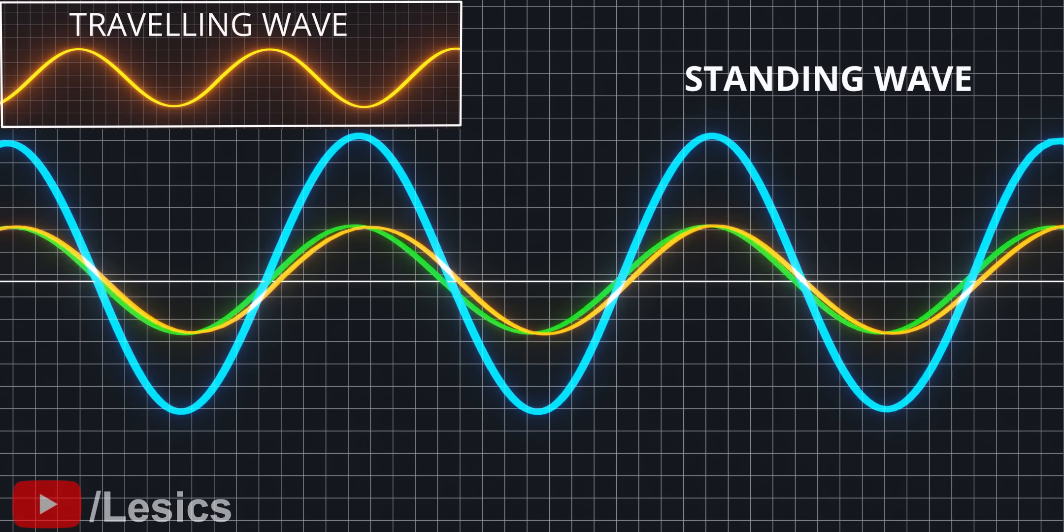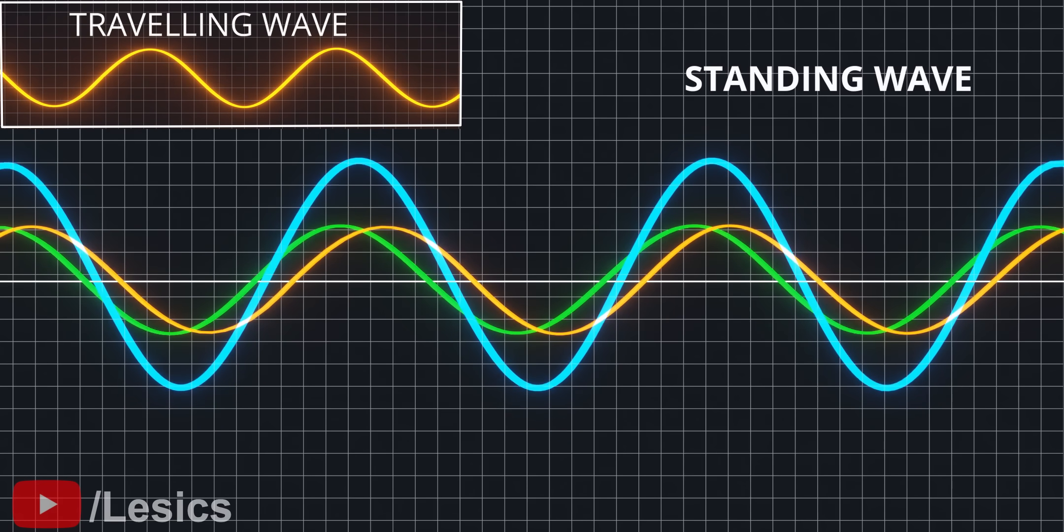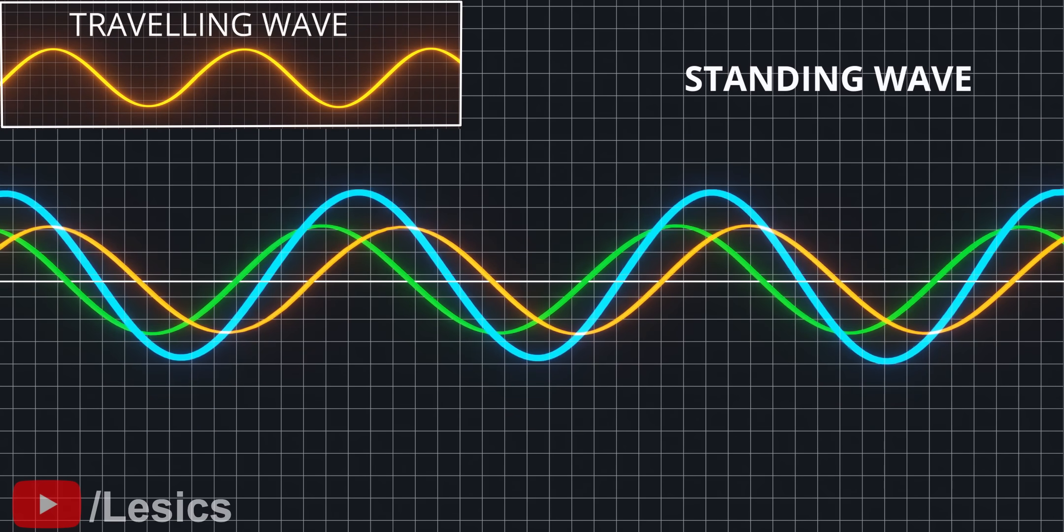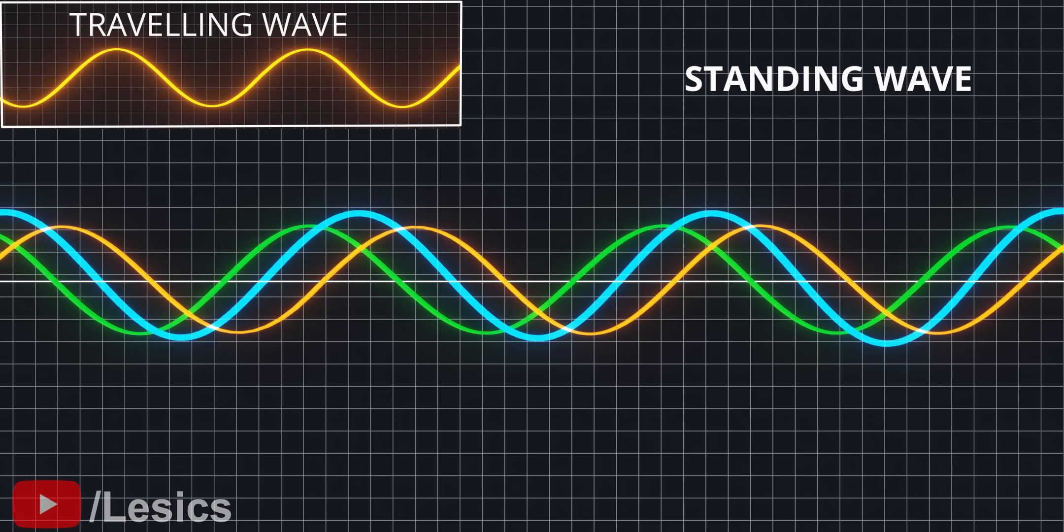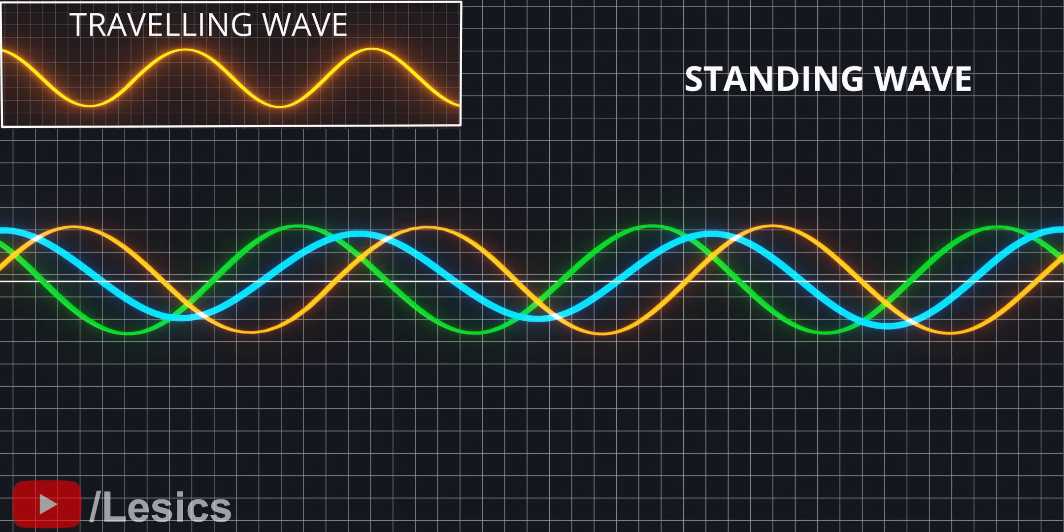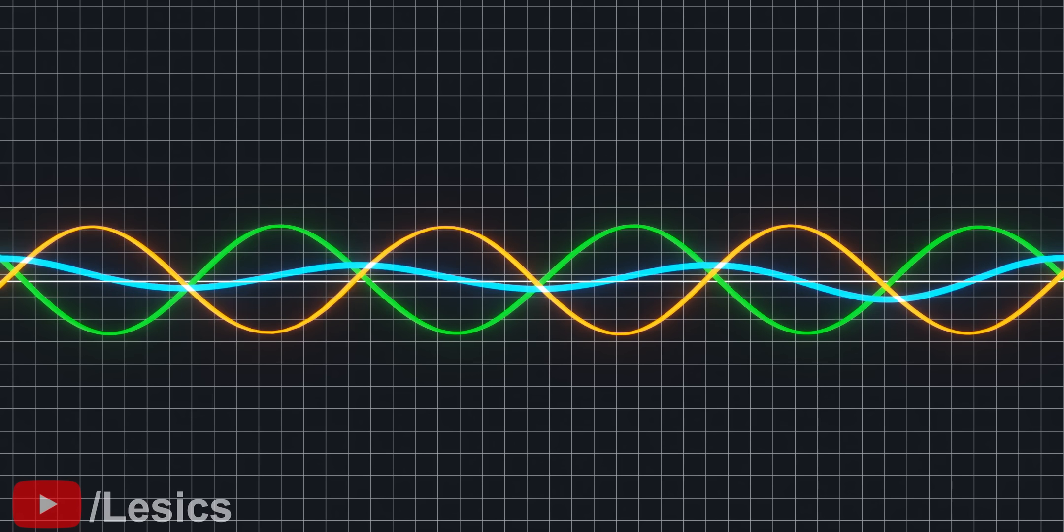It is formed when two waves having the same amplitude and the same frequency, moving in opposite directions, are superimposed on each other. Please have a look at these two electromagnetic waves which are traveling in the opposite direction.